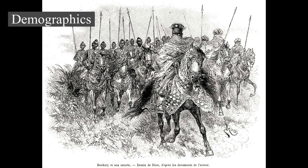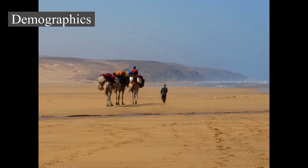Prior to the decolonization movements of the post-World War II era, Europeans were represented in every part of Africa. The decolonization during the 1960s and 1970s often resulted in the mass emigration of white settlers, especially from Algeria and Morocco (1.6 million Pieds-Noirs in North Africa), Kenya, Congo, Rhodesia, Mozambique, and Angola.